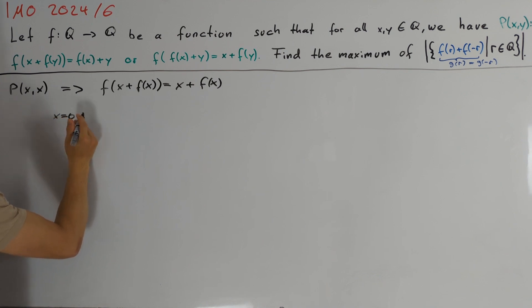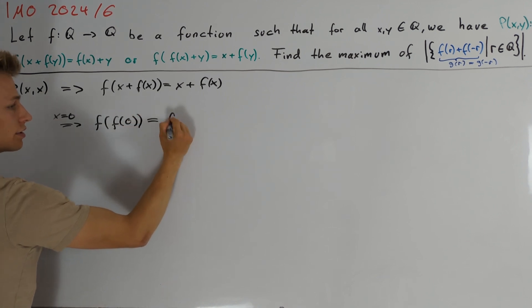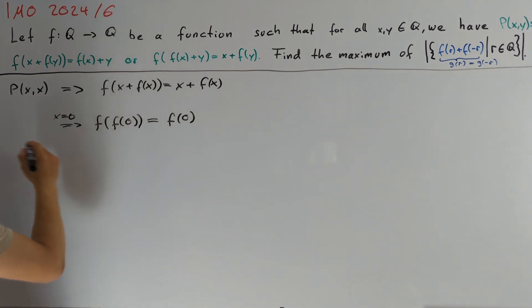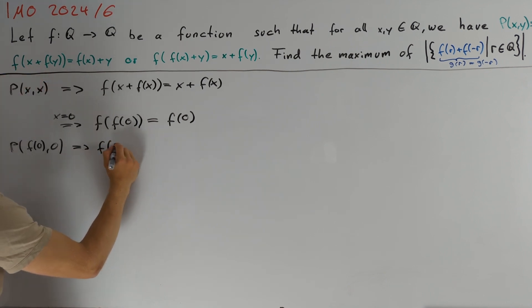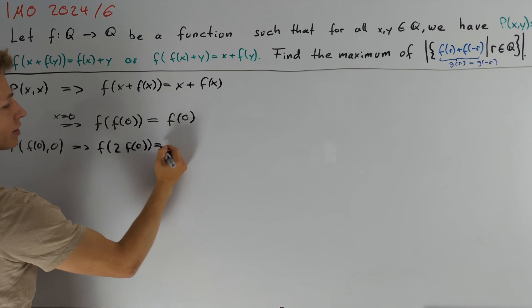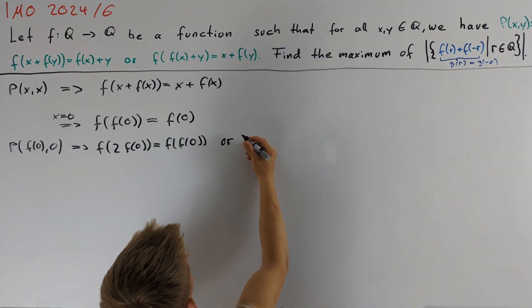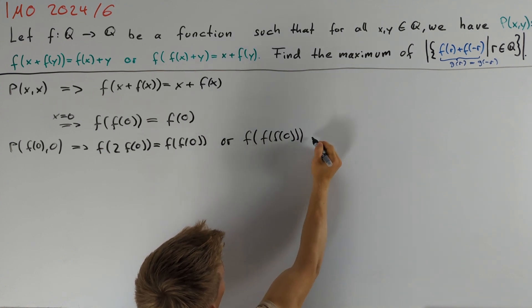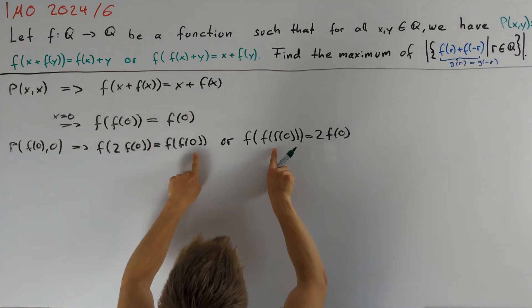Taking x = 0 in this equation implies that f(f(0)) = f(0). Let's try to further investigate the behavior of f(0). We start by taking a look at P(f(0), 0). This implies that f(2·f(0)) = f(f(0)) or that f(f(0)) = 2·f(0). We can use this equation to simplify these two terms to f(0).